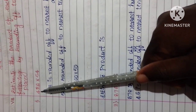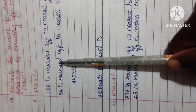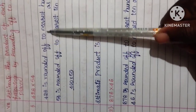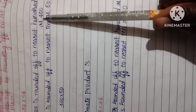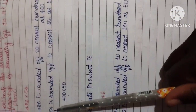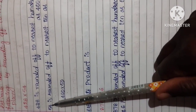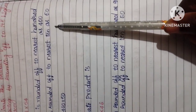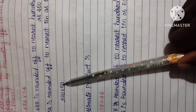First one: 428 into 54. First we need to convert the number. 428 is rounded off to nearest 100 as 400. 54 is rounded off to nearest 10 as 50, because below 5 is there. So we can multiply now 400 into 50.